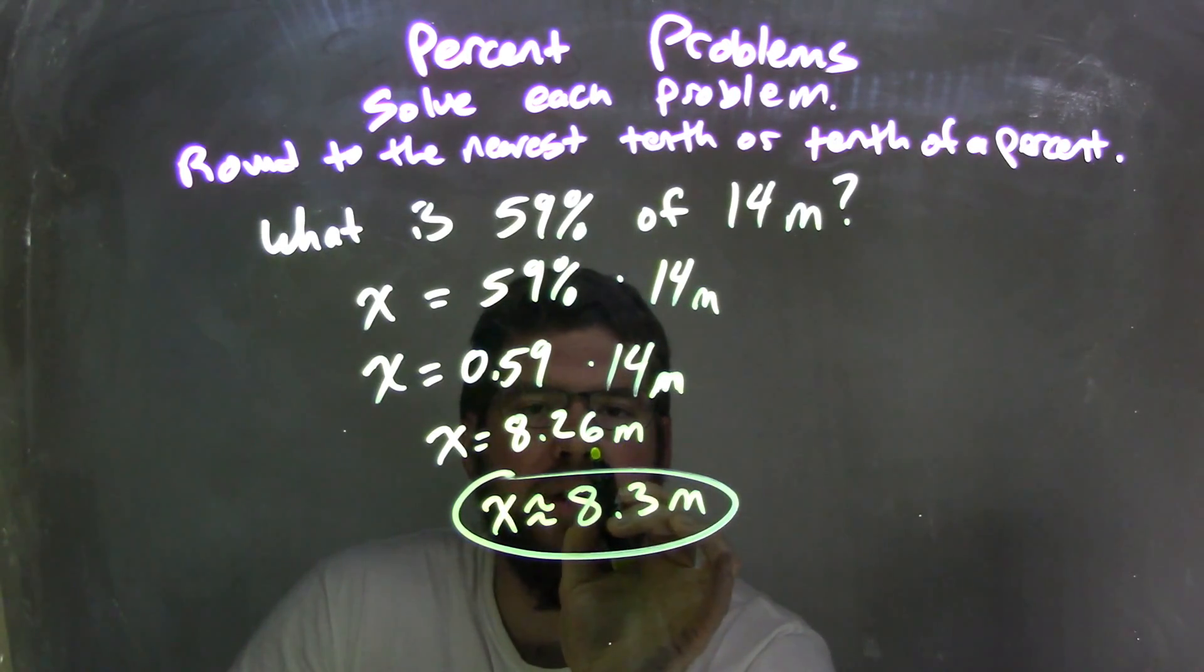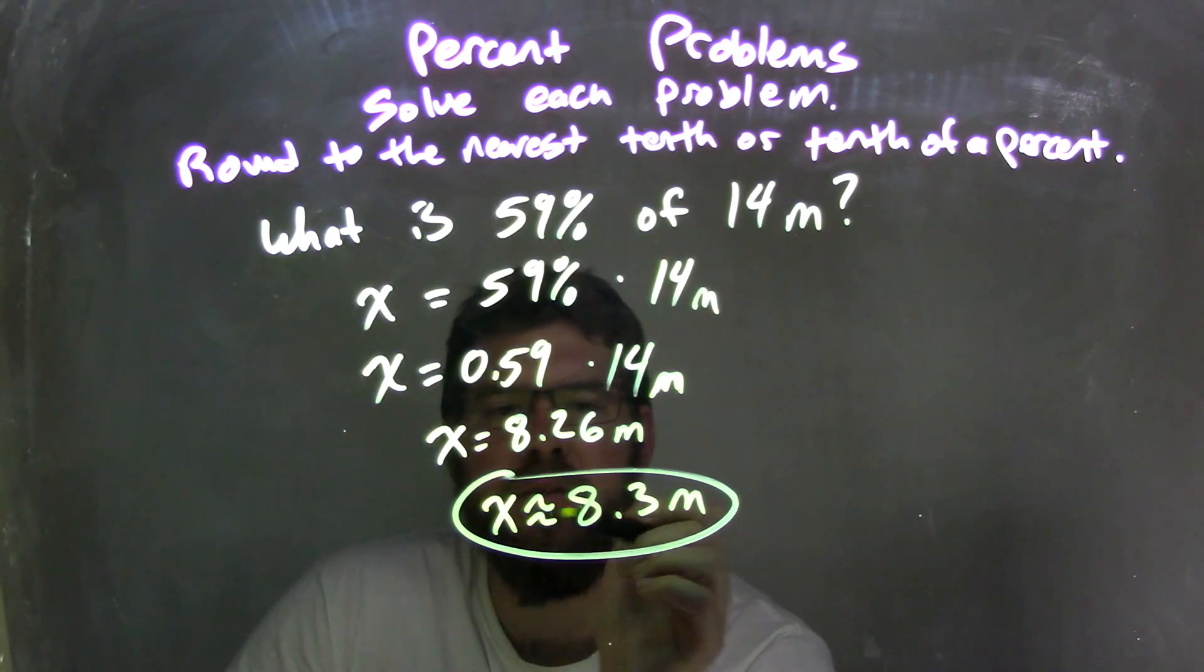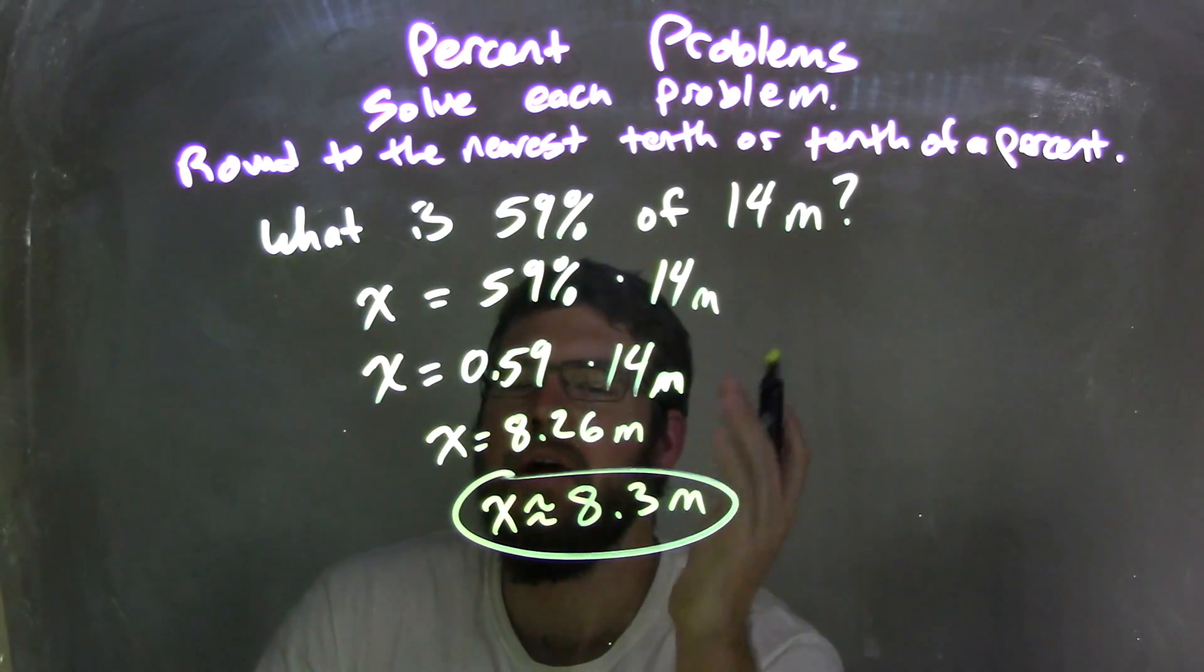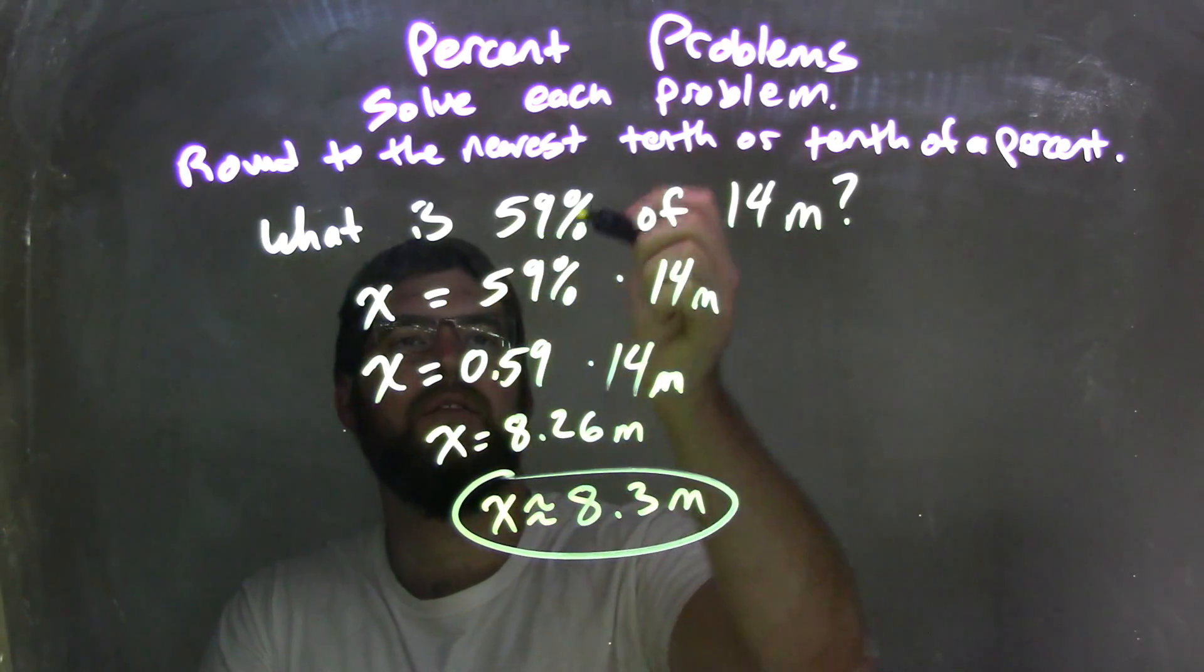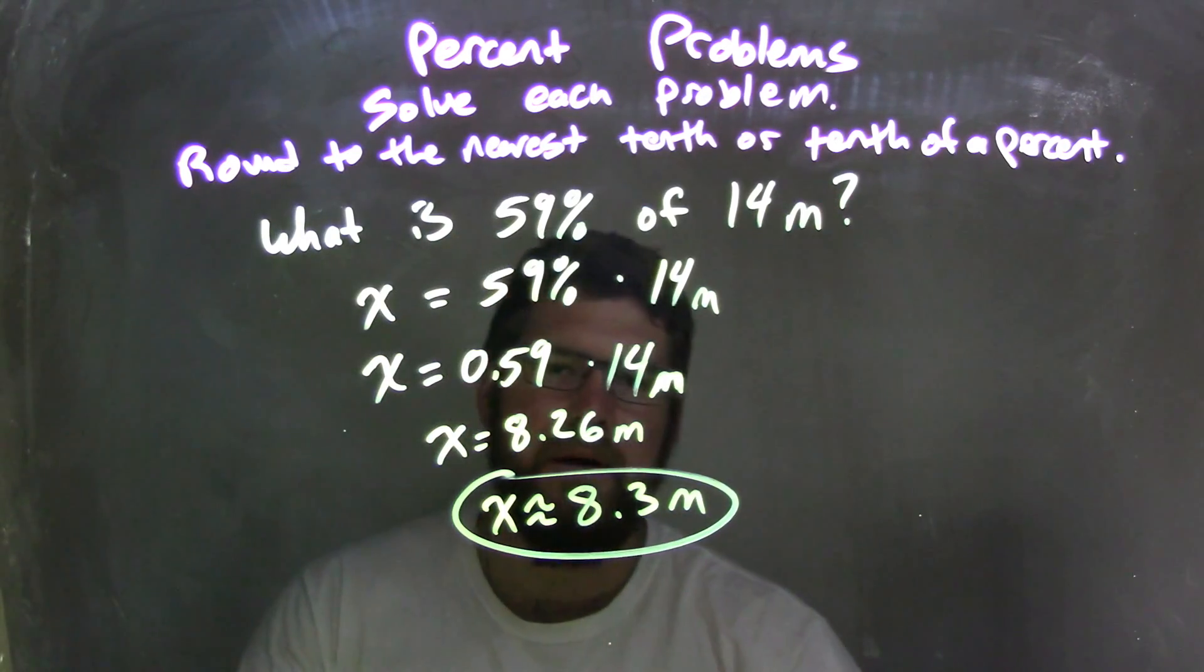Then I had to round that. Look at the 6, causing the 2 to round up to a 3, leaving me with an approximate answer of 8.3 meters. That answers our question. So our final answer here is 8.3 meters is 59% of 14 meters.